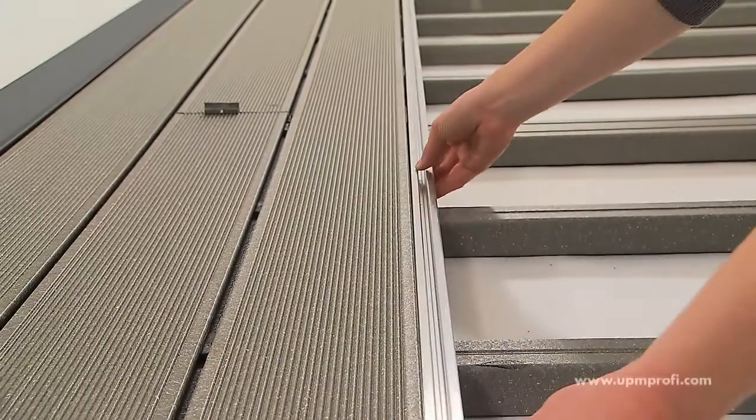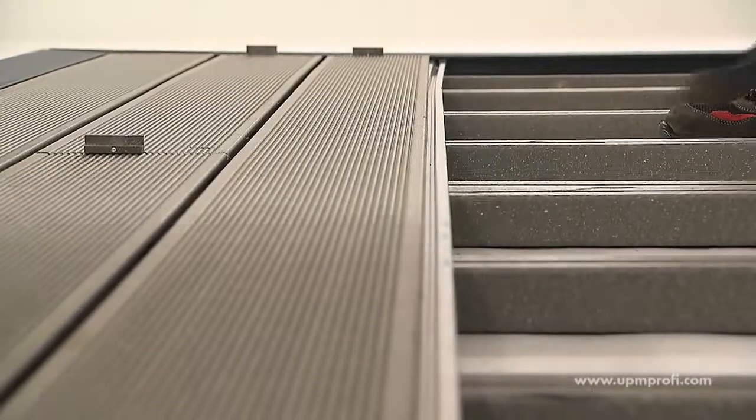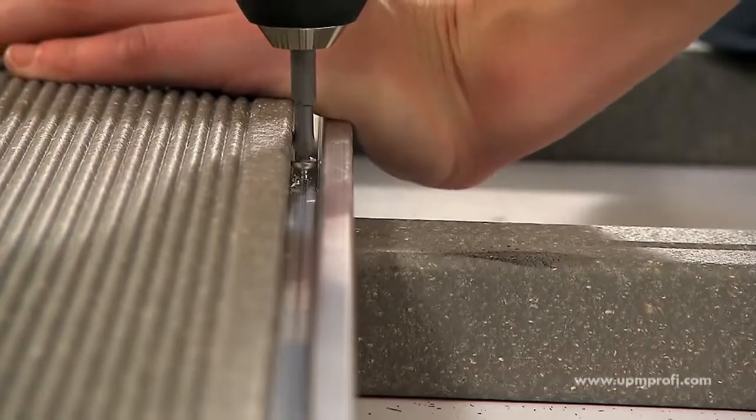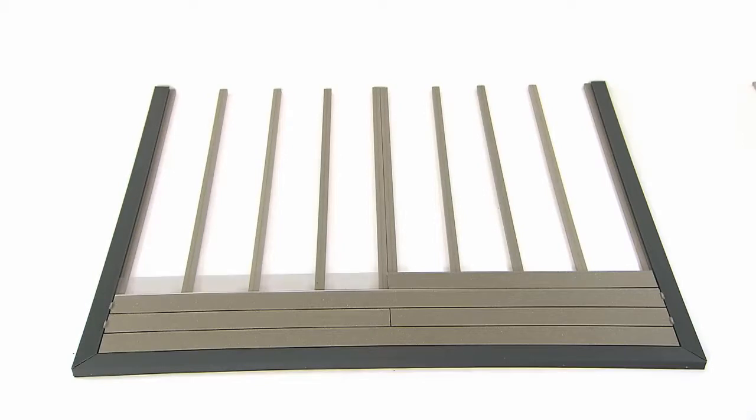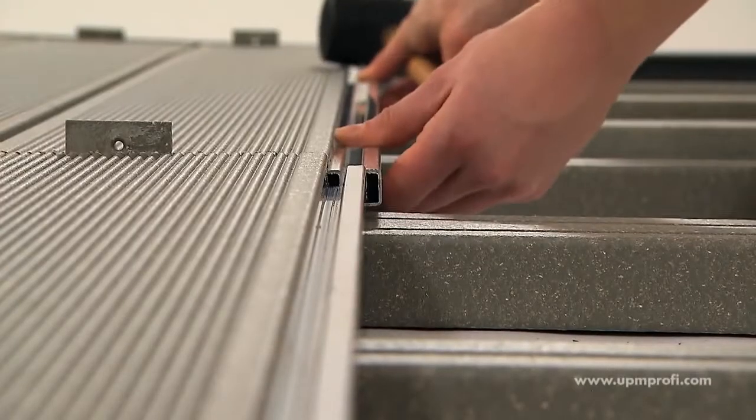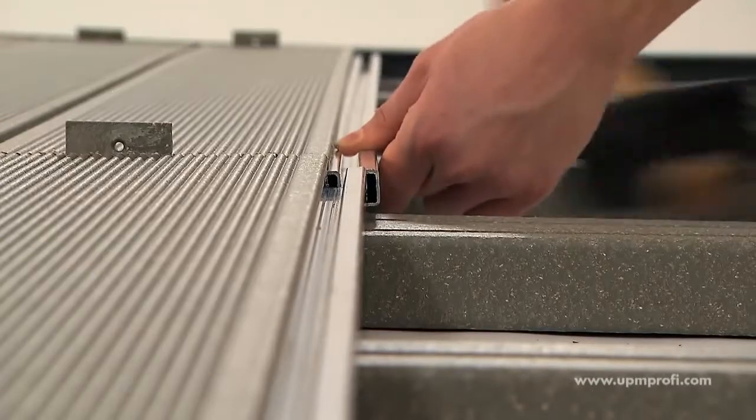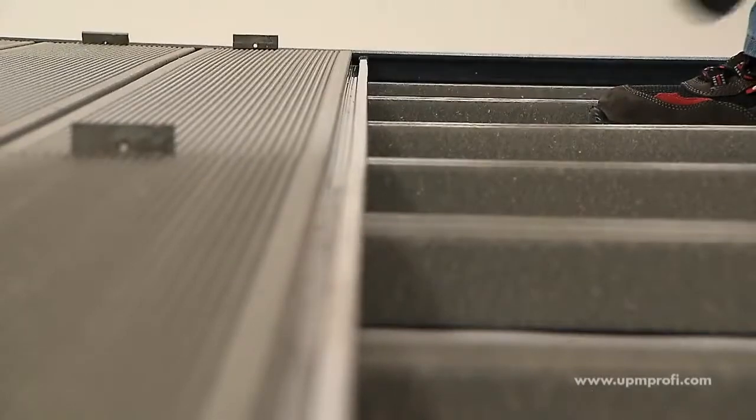UPM Profi aluminium rails can be used to create a closed deck surface. The deck boards are fixed as described above. The aluminium rail is tapped into the groove and fixed with self-tapping screws. When using aluminium rails don't forget to leave the same expansion gap as with the UPM Profi deck boards. This also helps drainage.